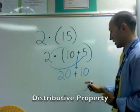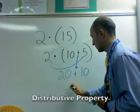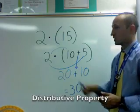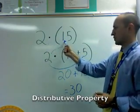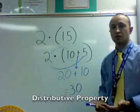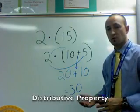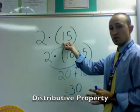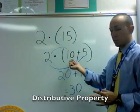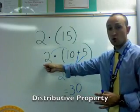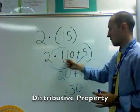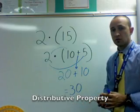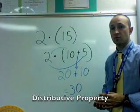Twenty plus ten gives us an answer of thirty. We can check our work: is two times fifteen thirty? Yes it is, so we did the problem the right way. The key was to turn the number inside the parentheses into an addition problem, distribute or multiply the outside number by both of those, add them together, and we get our final answer. That's the distributive property.